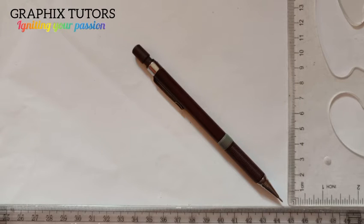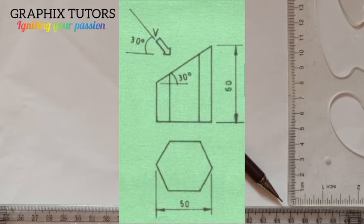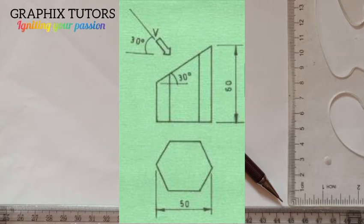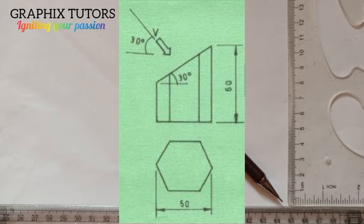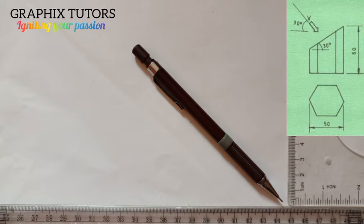Good everyone, my name is Graphics. The figure displayed on the screen shows a hexagonal prism cut as shown. We are asked to draw an auxiliary view from the direction of the arrow V at the top. I will move this diagram to the top right corner of the screen where we are going to work.